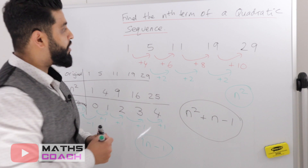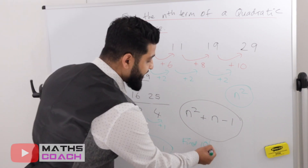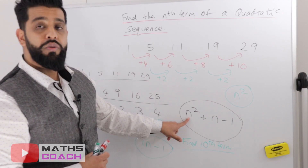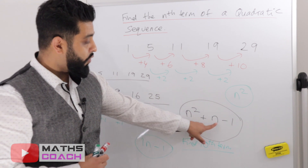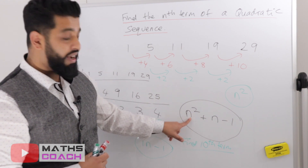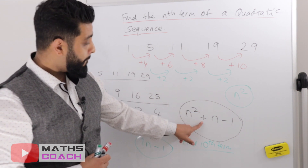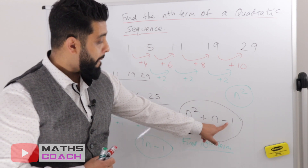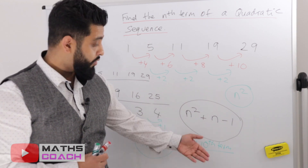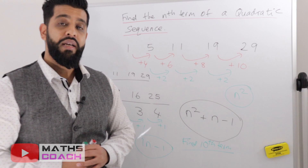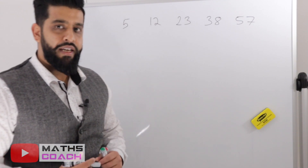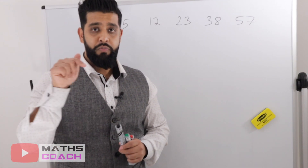A question may also ask you to find the tenth term. Substitute n equals 10: 10 squared is 100, plus 10 is 110, minus 1 is 109. So the tenth term is 109.